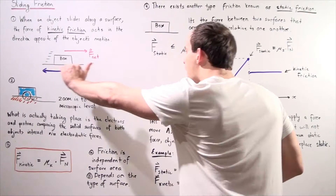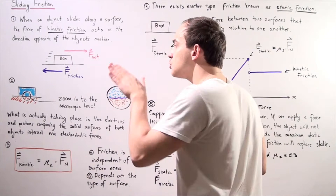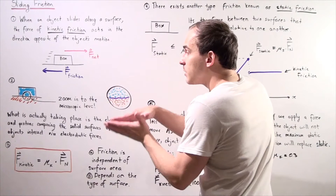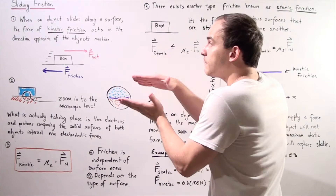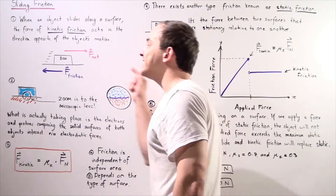The net force acting on the box that is creating the motion points in the positive direction and is parallel to our x-axis, to the ground. The two surfaces — the surface of the box and the surface on which the box is laying — will create a force known as kinetic friction that will oppose our net force, so it points in the negative direction along our x-axis.